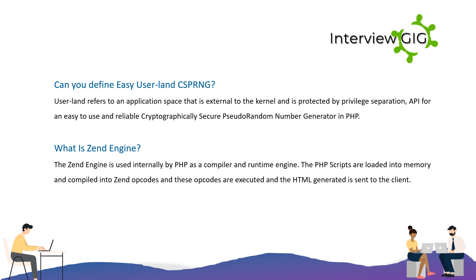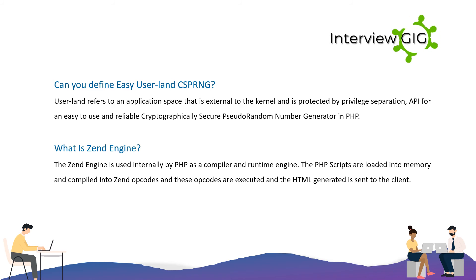Can you define easy userland CSPRNG? Userland refers to an application space that is external to the kernel and is protected by privilege separation. It provides an API for an easy-to-use and reliable cryptographically secure pseudo-random number generator in PHP. The Zend Engine is used internally by PHP as a compiler and runtime engine. PHP scripts are loaded into memory and compiled into Zend opcodes, which are then executed and the resulting HTML is sent to the client.